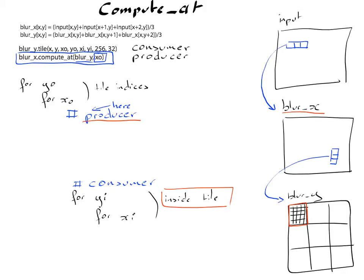And of course, we need data from blur x for the full tile, but because blur y has a vertical extent, we need a little more. And precisely, we need two more rows of pixels. Here there are two more rows.